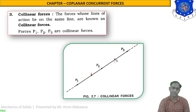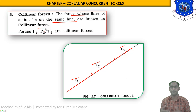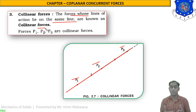The third system is co-linear forces. Along a straight line there are forces P1, P2, and P3. The forces whose lines of action lie on the same line are known as co-linear forces. Since P1, P2, and P3 all lie on the same line, they are known as co-linear forces.